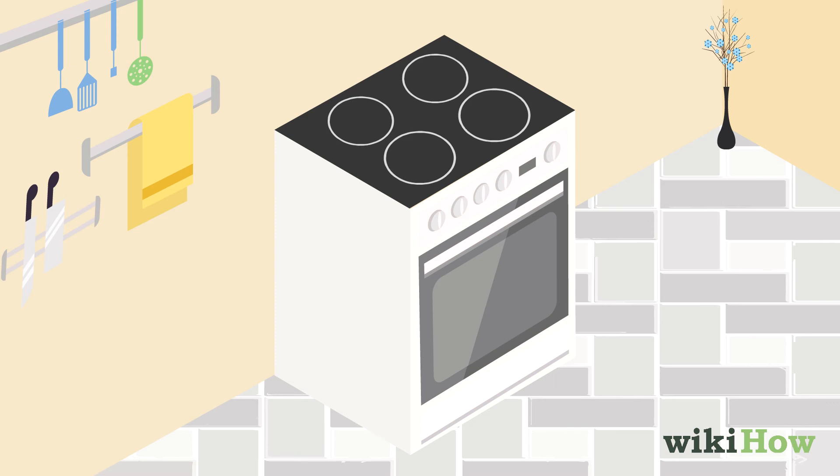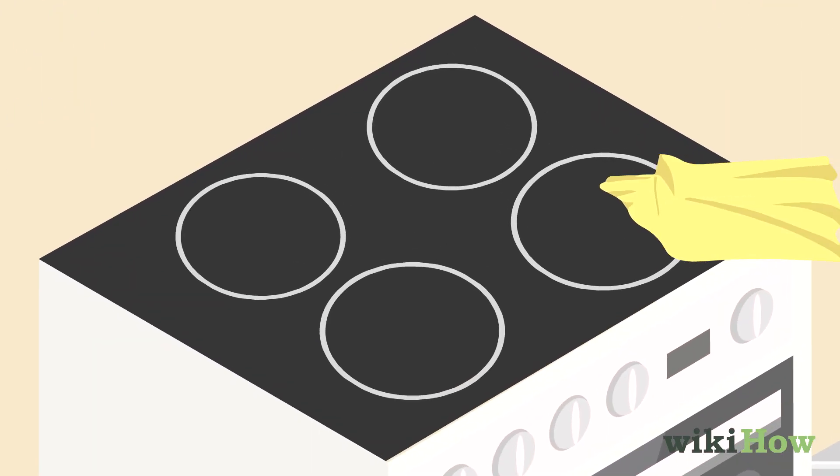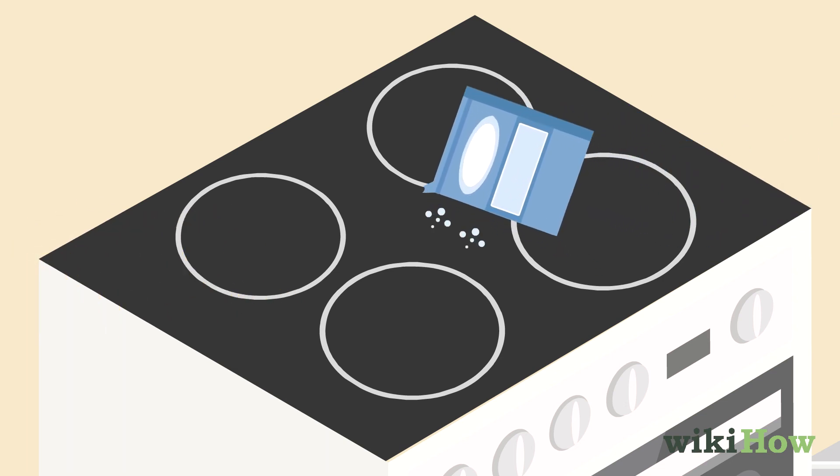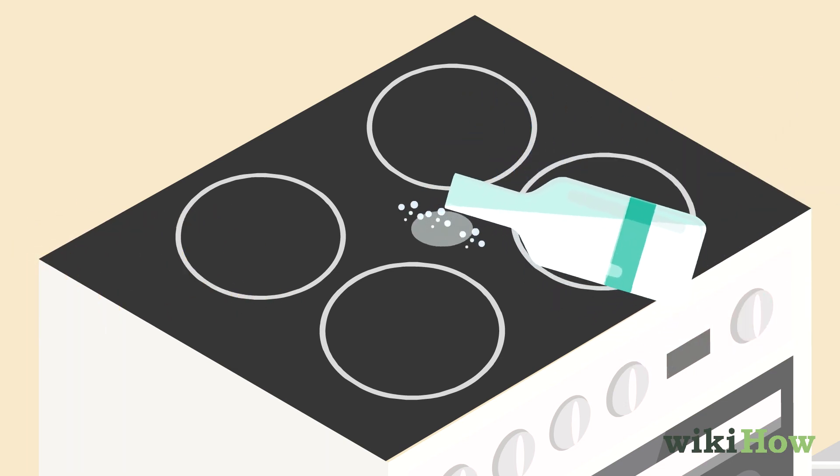If you have a glass-top electric stove, start by wiping off any crumbs on the stovetop. Then, sprinkle some baking soda over the stovetop and spritz it with vinegar.